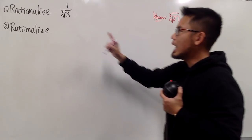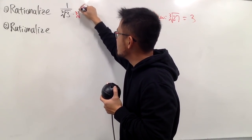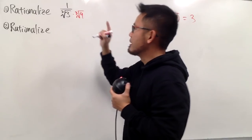And now, we have 3 already, so what can we do? Well, the idea is that we can just multiply the bottom by the cube root of 9, because 3 times 9 is 27.